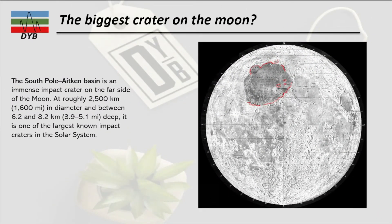The biggest crater on the surface of the moon is situated at the south pole. The South Pole–Aitken Basin is an immense impact crater on the far side of the moon — not the near side that we normally see, but the other side. It is roughly 2,500 kilometers in diameter and between 6.2 to 8.2 kilometers deep. It is also one of the largest known impact craters in the solar system that we have explored to date.